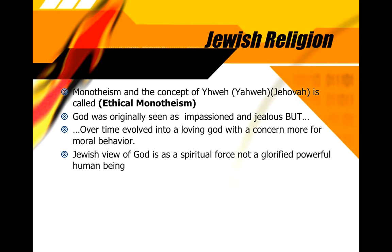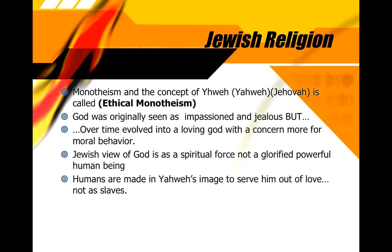Another key difference in the Hebrew Jewish view is that God is a spiritual force, not a glorified human being. All the other gods of the region were like people — with bad days, good days, sometimes vengeful, sometimes kind. The Jewish view is that God is a spirit who cannot be fully understood or controlled, and is not affected by things the same way as humans. Also significant is the idea that humans were created by God to serve him out of love, not enslaved — they have free will. This concept of free will also appears in Zoroastrianism — humans can choose what they want, but if good, they will choose what God wants.